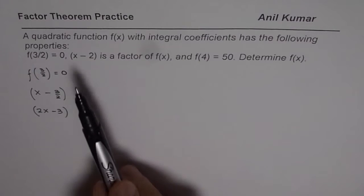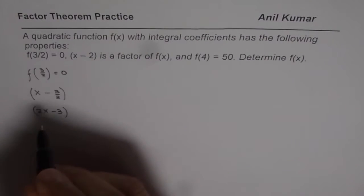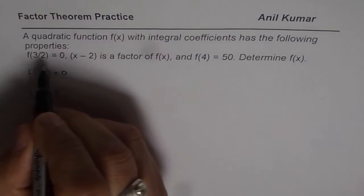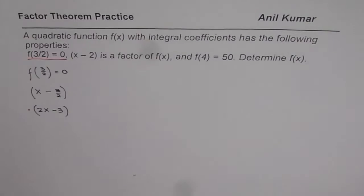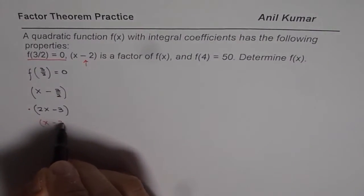Now, we are already given another factor as x minus 2. So this is the factor because of this property, and we are already given a factor x minus 2. So x minus 2 is given to us as a factor.